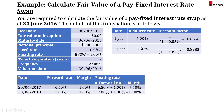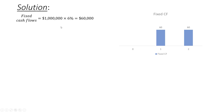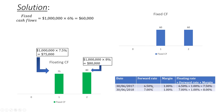Now let's calculate the cash flows. First, the fixed cash flow is based on 6% multiplied by $1 million, which is $60,000. So we have $60,000 for each of the next two years. For the floating cash flow, we use the forward rate table: 7.5% times $1 million equals $75,000 in the first year, and 8% times $1 million equals $80,000 in the final year.